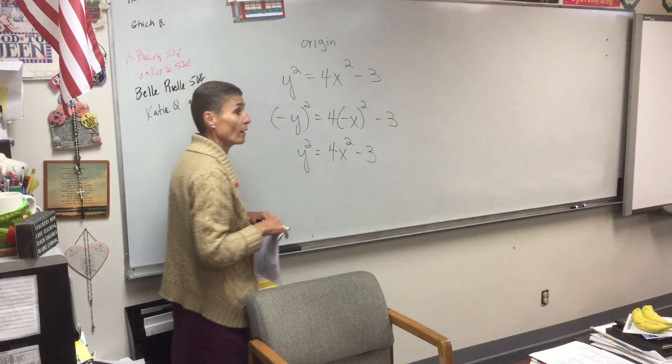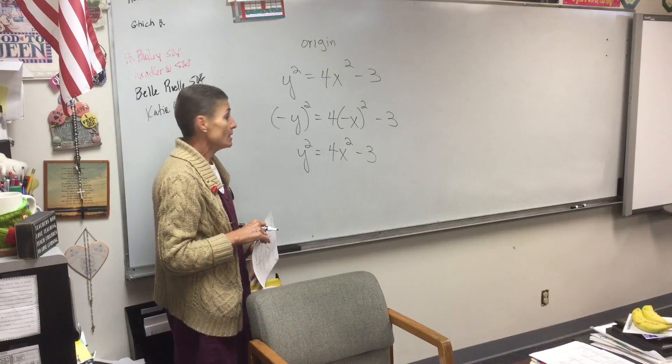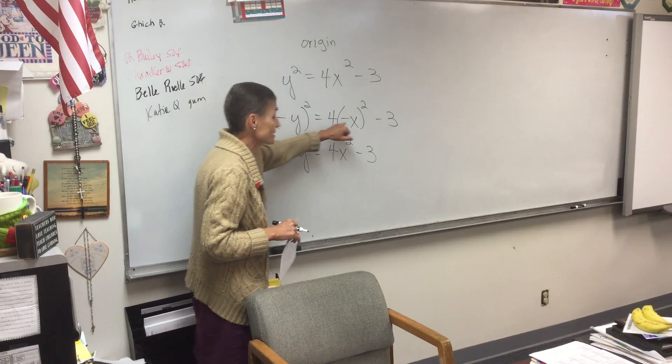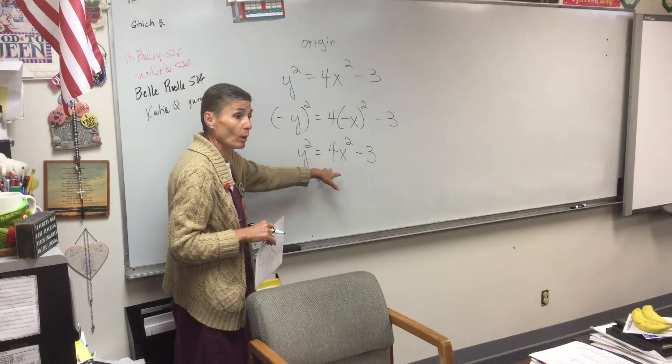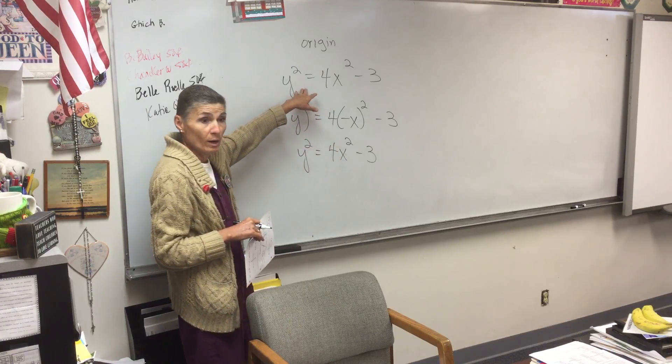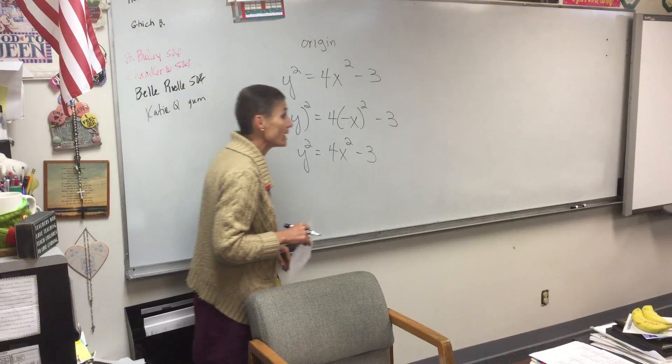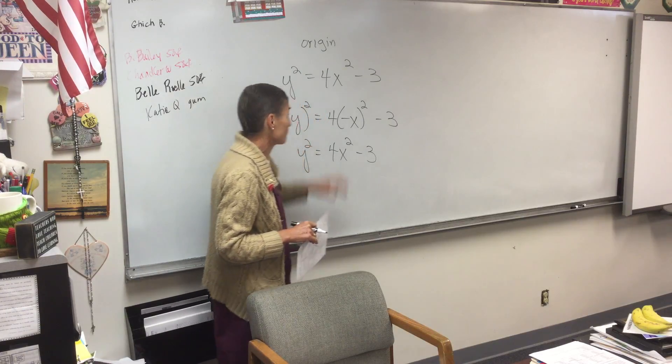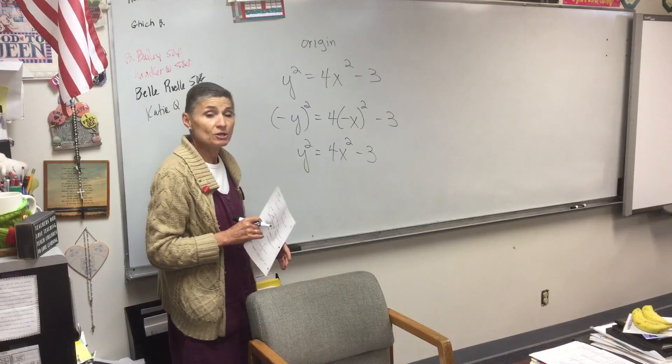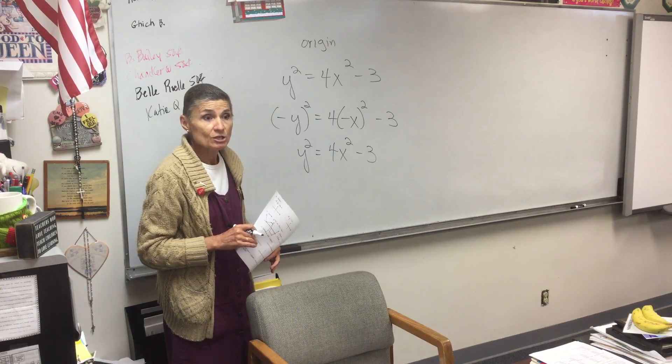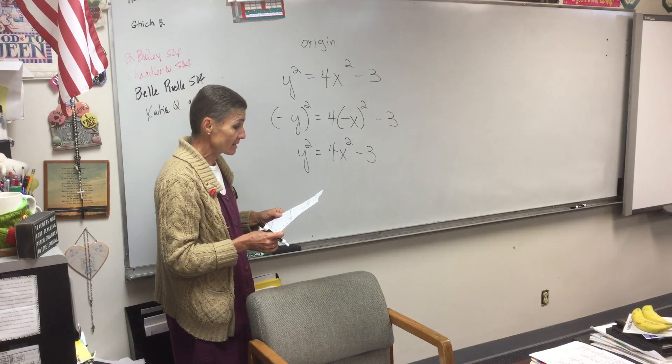I get y squared, four x squared, minus three, because don't the negatives square out in both cases? Now notice, I switched the signs on both variables, and what happened? I ended up with exactly what I started with. When you end up with exactly what you started with after you've done your test, then you have symmetry.